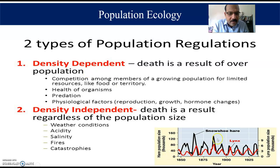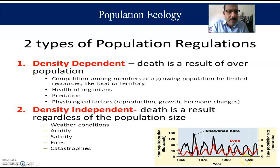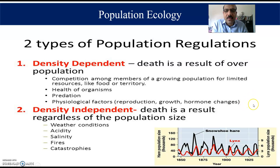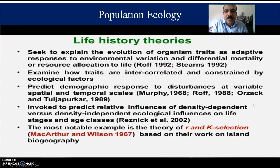Here a graph is represented showing lynx and snowshoe hare population sizes. These represent population regulation from 1850 to 1925 — about 100 years of population rate based on density-dependent and density-independent factors. Remember: there are two types of population regulation — density-dependent and density-independent.